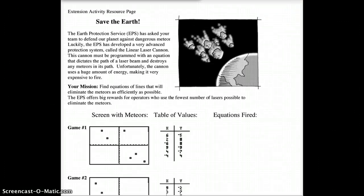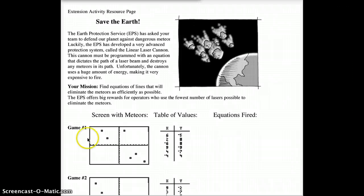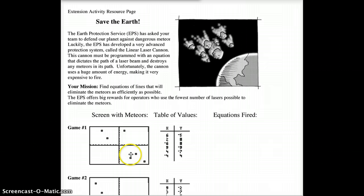Alright, today lesson 7.3.4, or as CPM calls it, the Extension Activity. Here's what you're going to be doing: these little graphs down here show meteors, these little dots here, heading towards the Earth. If they hit the Earth, like back in the dinosaur ages, we become extinct. We don't want that to happen.